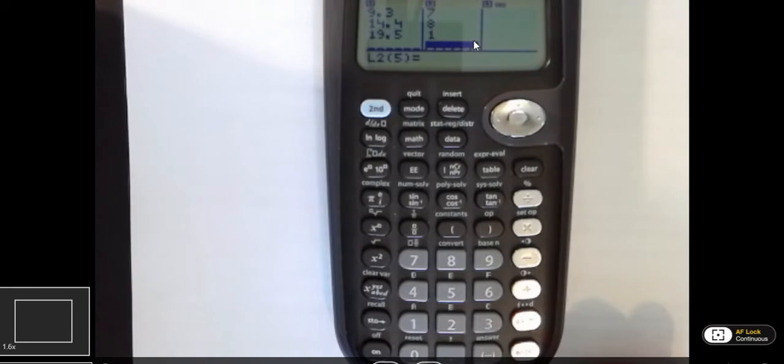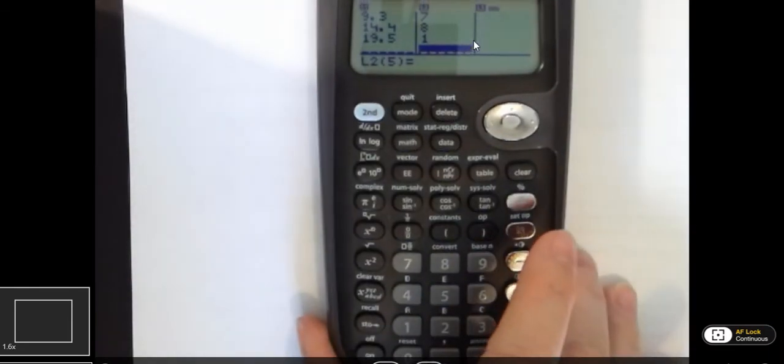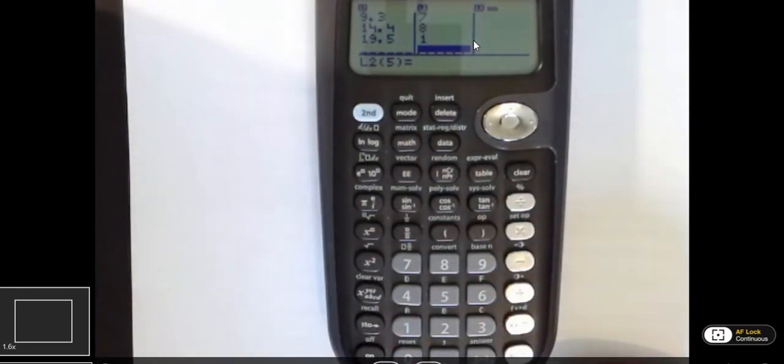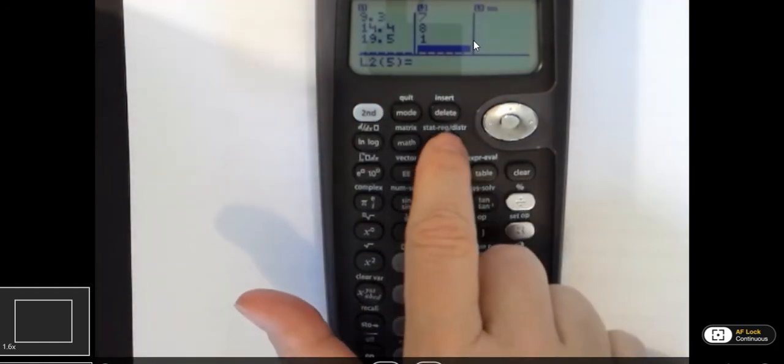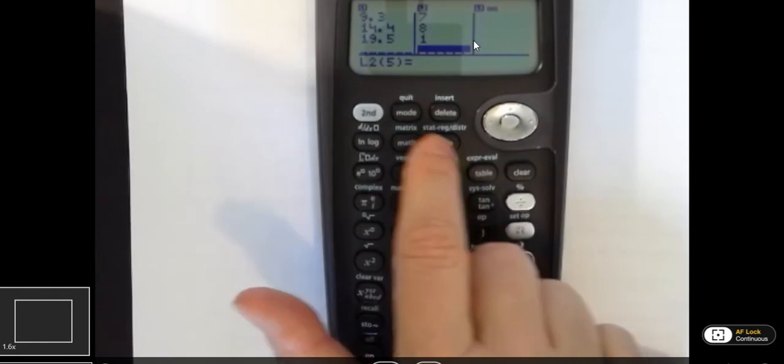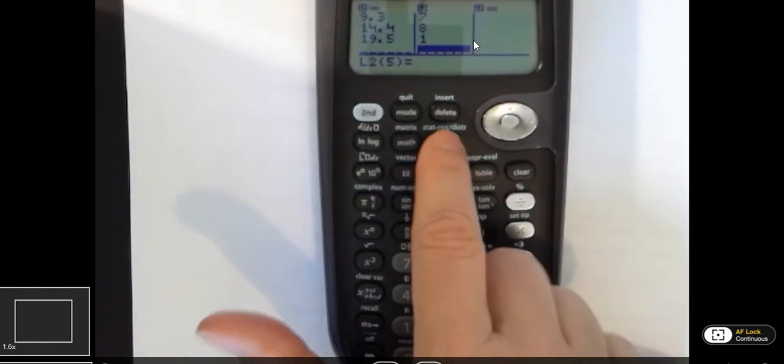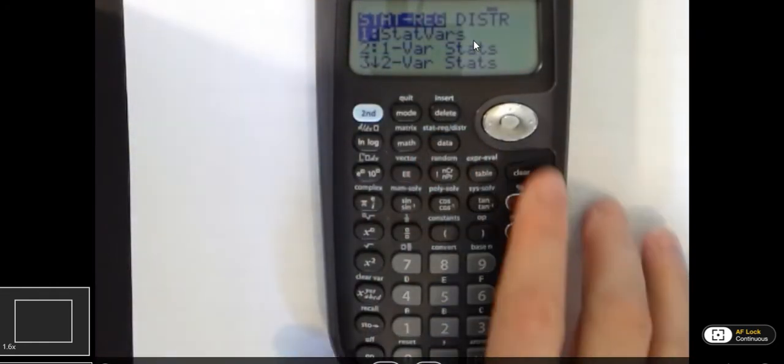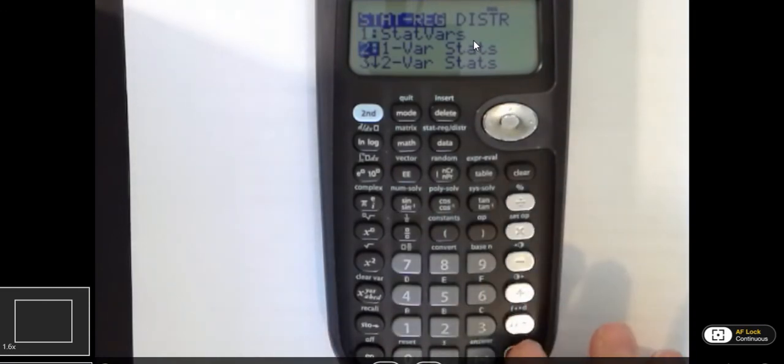Now that I've got that in there, I want the calculator to do some work for me. So I'm going to ask it to do stat calculations by going to second function because I want the button that's above data. So I'm going to go to second function and data. And again, I'm going to go to one variable stats, and I'm going to hit enter.